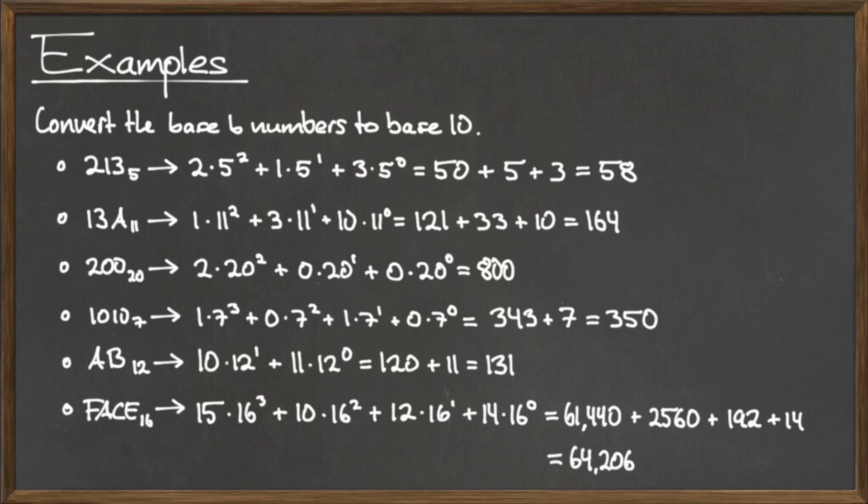The number AB written in base 12 is the base 10 number 131. And the number FACE written in base 16, or hexadecimal, is the base 10 number 64,206.